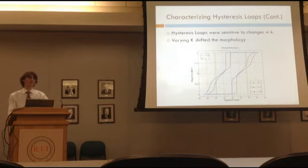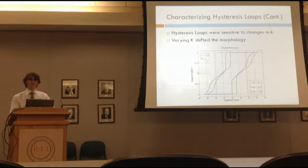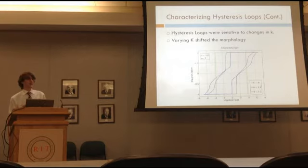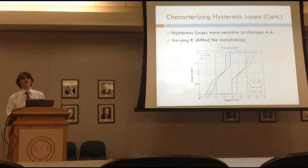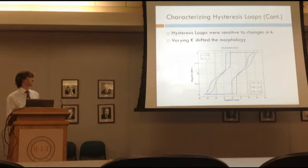Increasing K to 1.1 changed the morphology of the loop from a very hard loop to more of a hybrid, where it's kind of a combination between a very hard and soft loop. It also pushed the nucleation points closer to zero. Increasing K further pushed it further into this hybrid morphology. We like values around 1.1 because we're interested in making graphs that look like what our collaborator wanted.